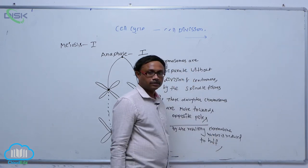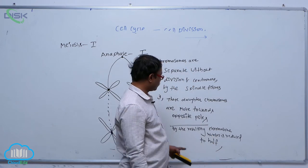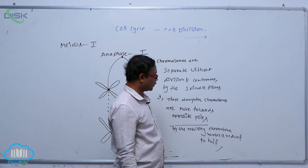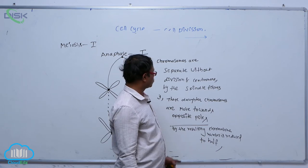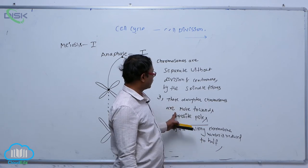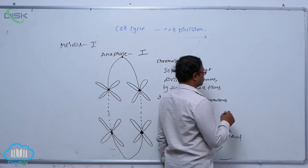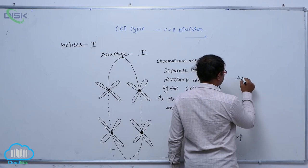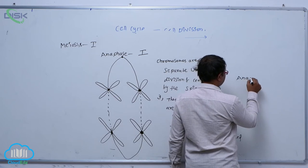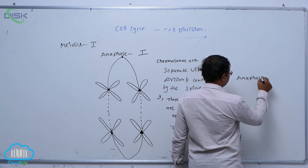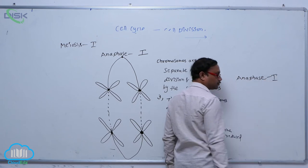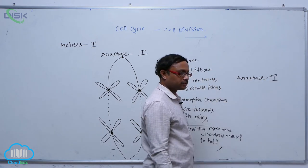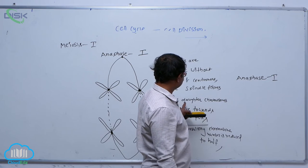By the resulting process, chromosome number is reduced to half. It means the diploid number of chromosomes is reduced to the half, haploid number of chromosomes at Anaphase I. In Anaphase I, without division of the centromere, these daughter chromosomes are